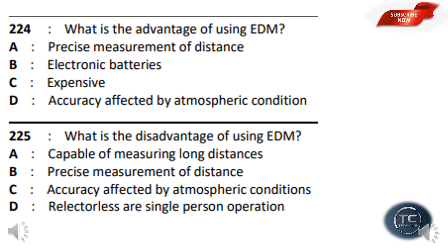What is the advantage of using EDM? The options are: precise measurement of distance, electronic battery is expensive, and accuracy affected by atmospheric conditions. Precise measurement of distance is the advantage. Accuracy affected by atmospheric conditions and being expensive are disadvantages. The answer is precise measurement of distance.